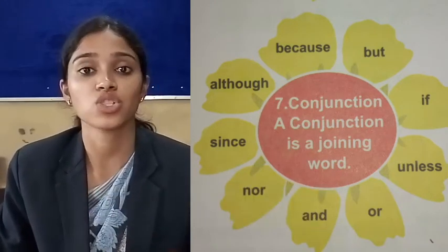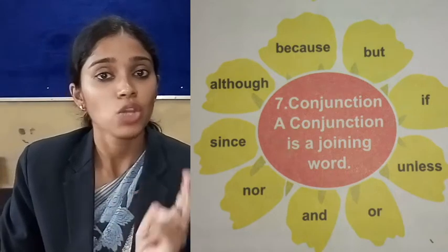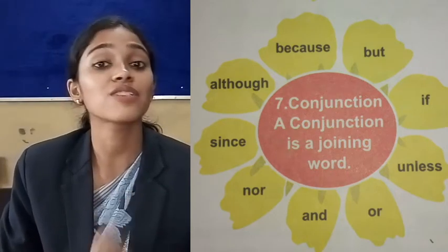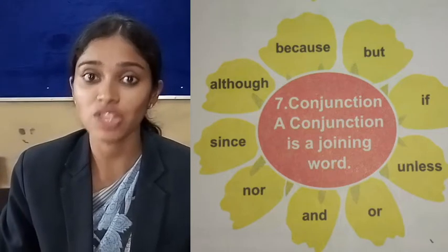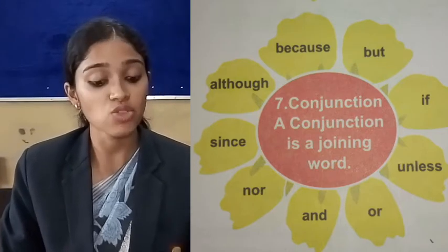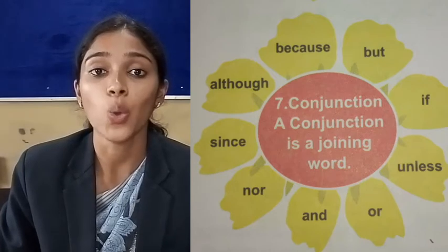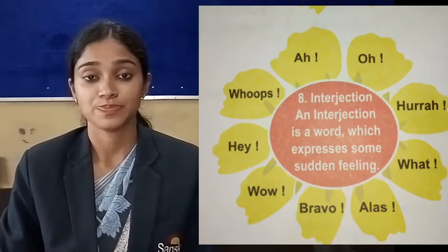So this is conjunction. When two separate sentences are joined with the help of a word, it is known as conjunction. A conjunction is a joining word. Now the last part of speech — the last topic of the chapter parts of speech is interjection.